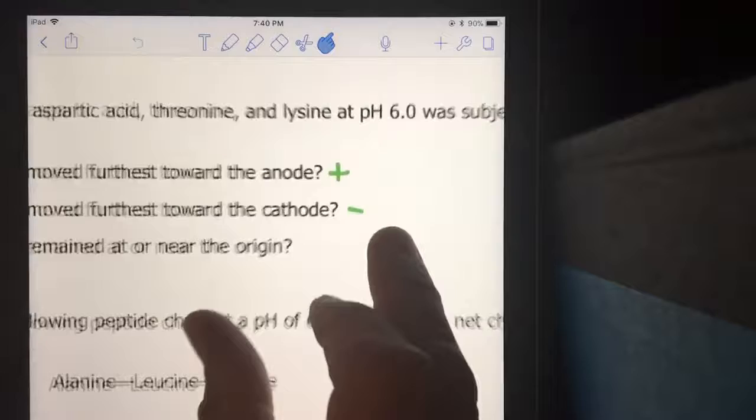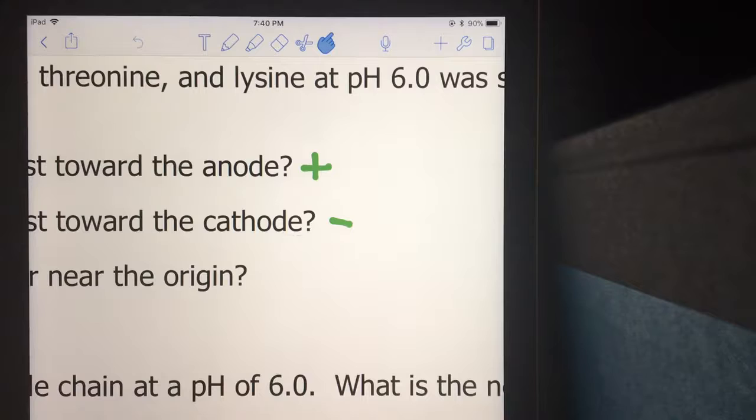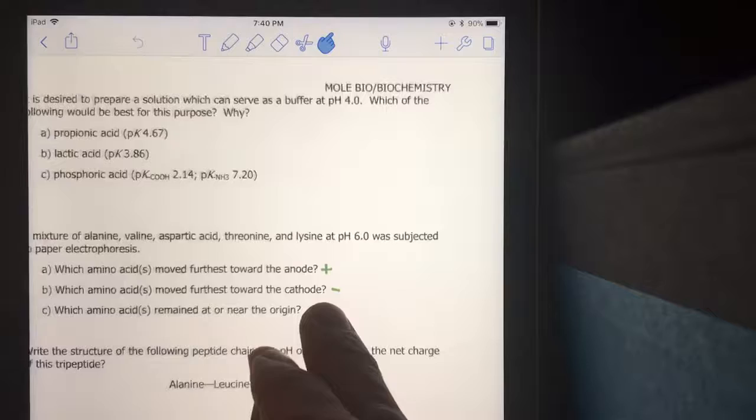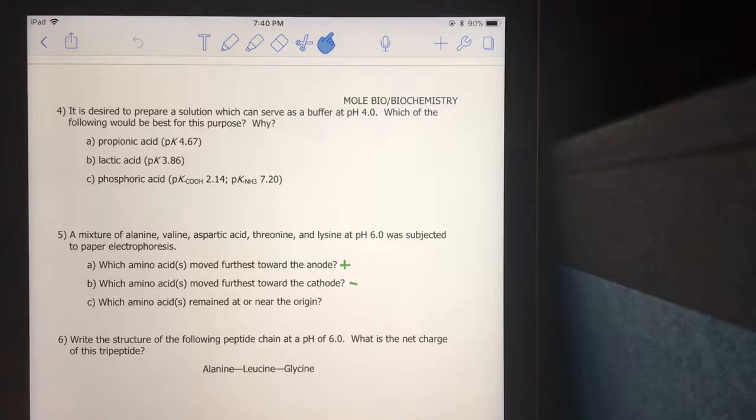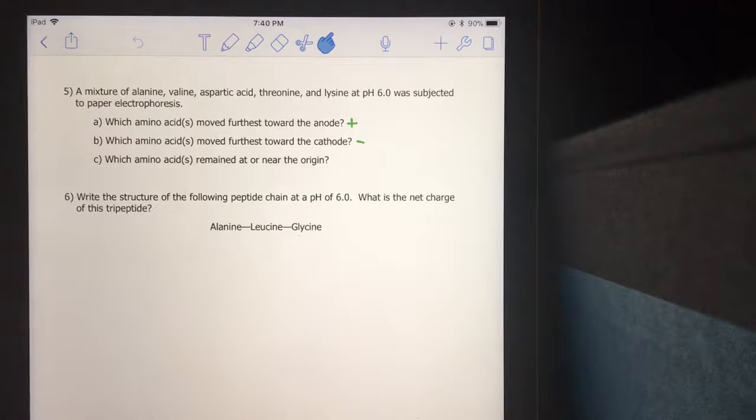For number five with amino acids here, I want to know which one goes furthest to the anode and cathode. But one thing, in an electrolytic cell the anode actually is where the positive charge is and the cathode is the negative. So I need you to look at those particular amino acids, see how they're charged at a pH of six, and then indicate which ones go to the positive side, the negative side, and which don't move at all.